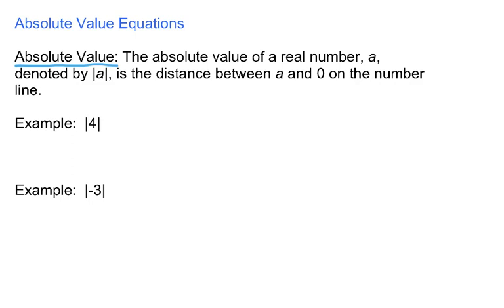The absolute value of a real number A, which is denoted by this little symbol, the number A between two vertical bars, is simply the distance between A and 0 on the number line.